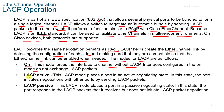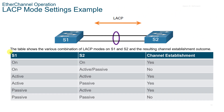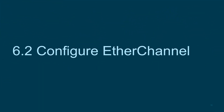The modes for LACP are as follows. ON: Forces the interface to channel without LACP. Interfaces configured in ON mode do not exchange LACP packets. ACTIVE: Places a port in an active negotiating state. The port initiates negotiations with other ports by sending LACP packets. PASSIVE: Places a port in a passive negotiating state in which the port responds to LACP packets that it receives but does not initiate LACP packet negotiation. I would be familiar with these three modes because you're most likely going to see a question on the exam. Pause the video and study the LACP mode table as well.